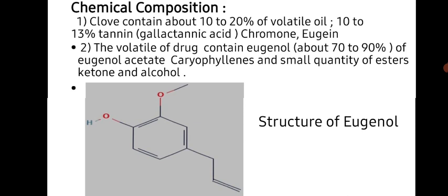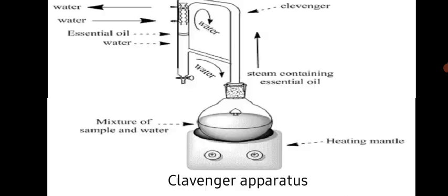This is the structure of eugenol, and this is the picture of Clevenger Apparatus.